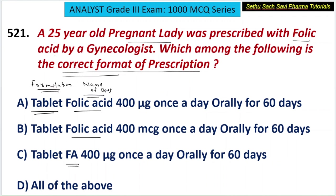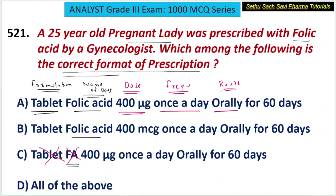Choice C can be directly eliminated because folic acid is given as an abbreviation. You are left with choice A and choice B. The formulation is given, the name of the drug is given. The dose has to be given, the frequency of the dose — whether it is once a day, twice a day (BD), or thrice a day. The route of administration should also be given — whether oral, parenteral, or sublingual.